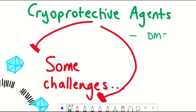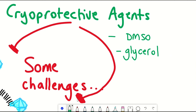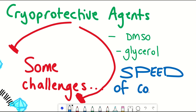Two standard cryoprotective agents are DMSO and glycerol, with DMSO famously being used for storing skin. But it's not just about the use of cryoprotective agents — it's also about the speed of cooling, as different cell types have different optimal thresholds. The whole rationale behind cryoprotective agents is to prevent ice crystals from forming.